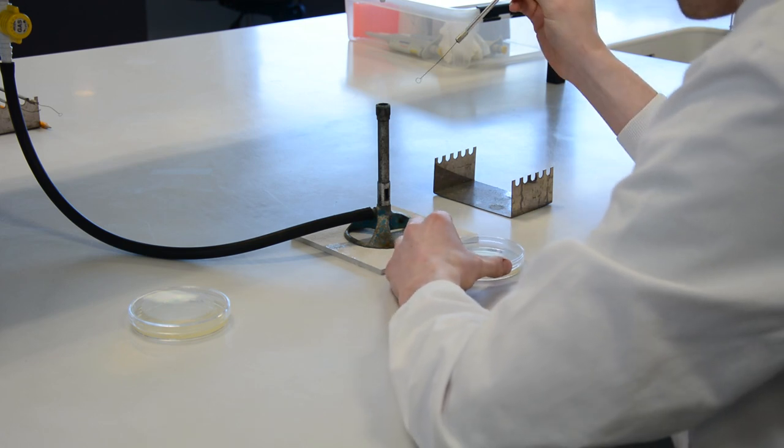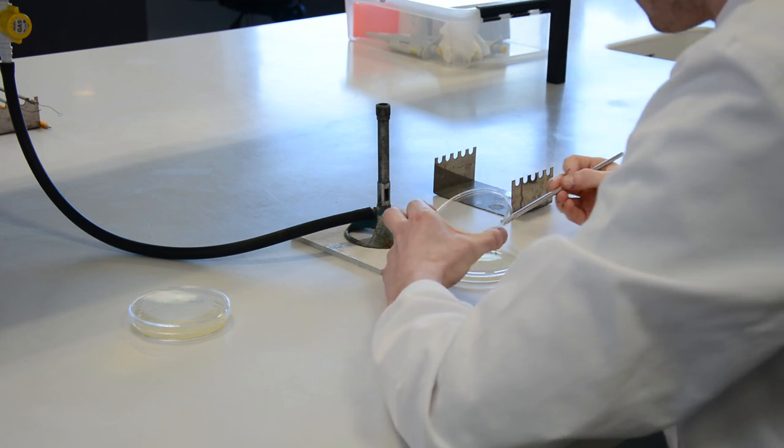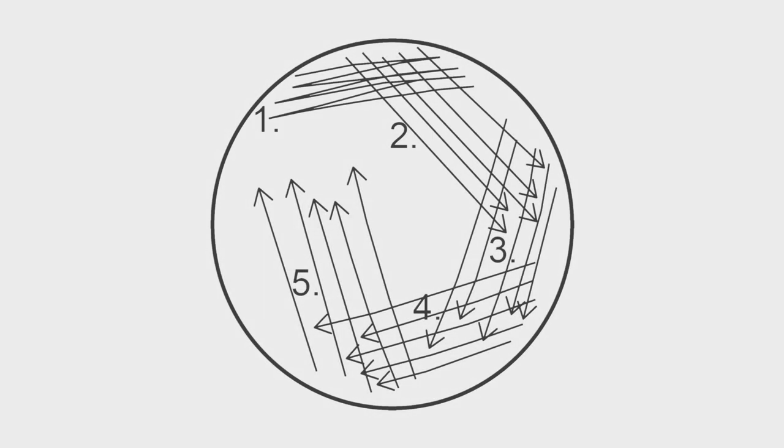Finally, the loop is sterilized and once more used to streak the culture into the remaining un-inoculated part of the plate, as shown in part 5.